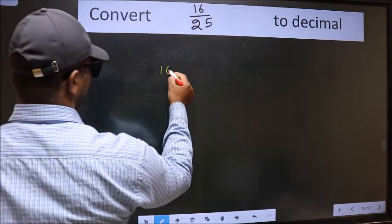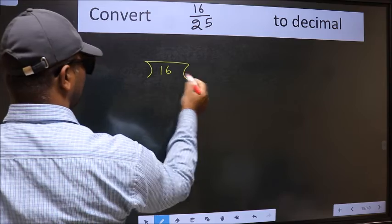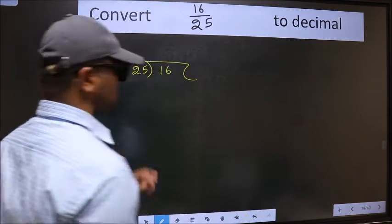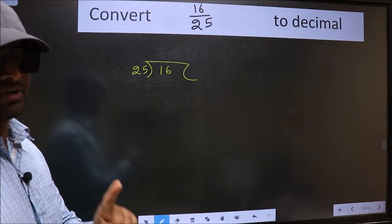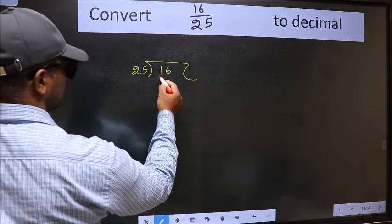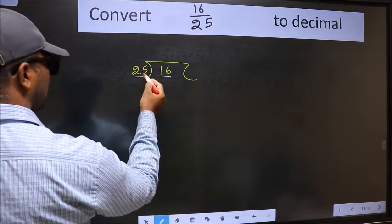16 here and 25 here. This is your step 1. Next, here we have 16 and 25.